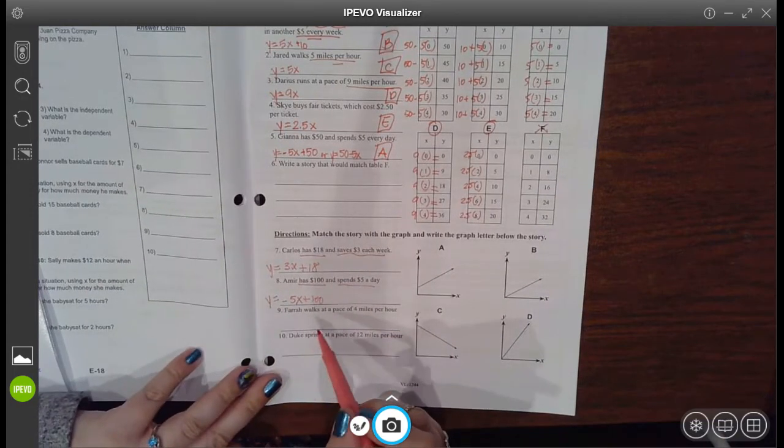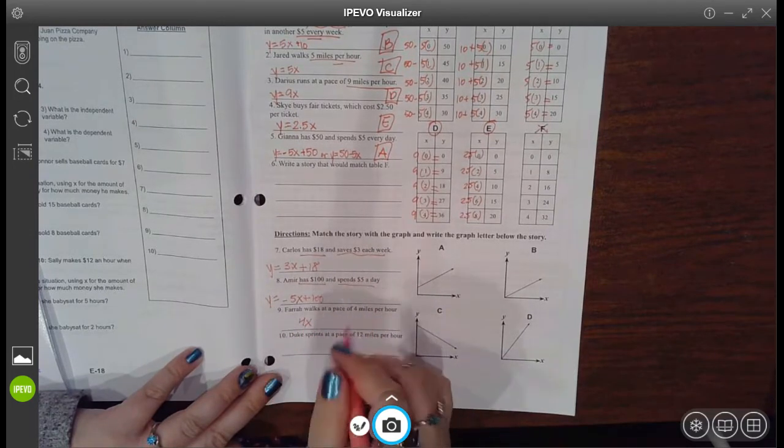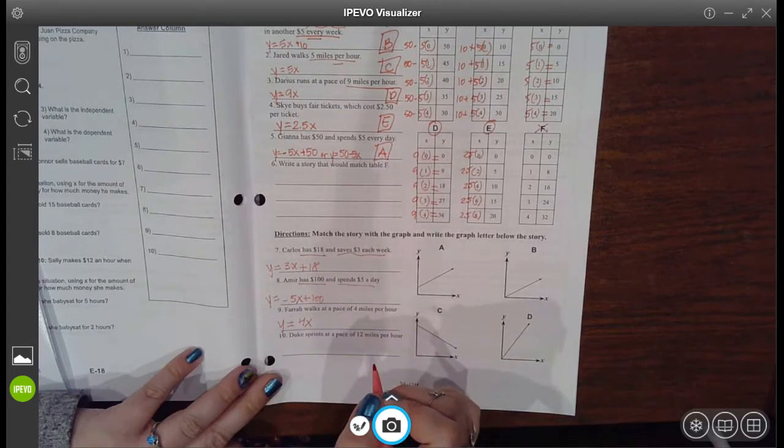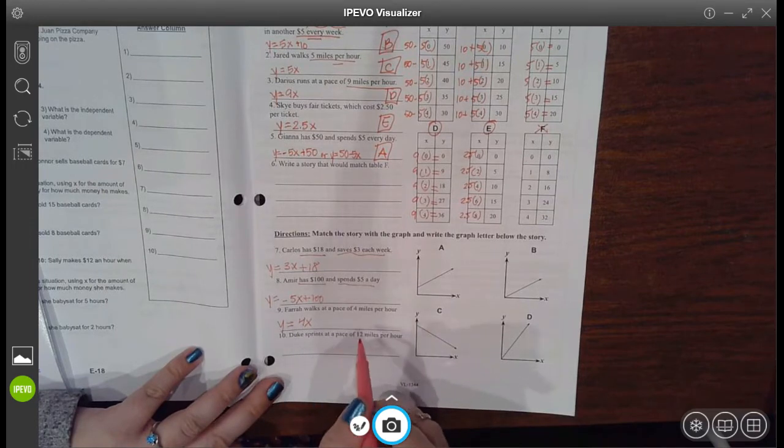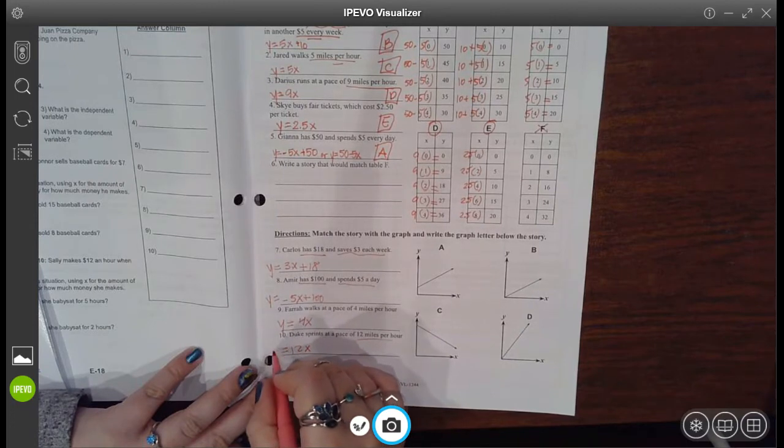Here it says Farah walks at a pace of 4 miles per hour. So 4 times the number of hours she goes is equal to the number of miles, and there was nothing else of a starting point. Duke sprints at a pace of 12 miles per hour. So just 12 times however many hours he goes is equal to his distance.